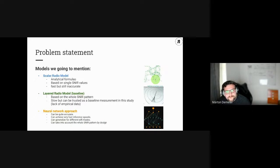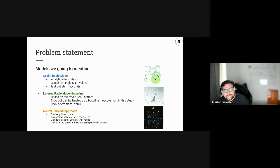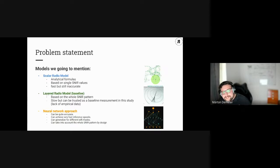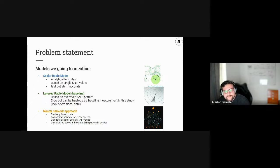I've outlined the models in colors that will remain consistent throughout the whole presentation. There is the scalar radio model, which uses analytical formulas based on just single SNR values — it's fast but inaccurate. There is the layered radio model, which will act as our baseline since we lack empirical data from real-life Wi-Fi networks. It is based on the whole SNR pattern and is quite slow, but it can be trusted as a baseline measurement.